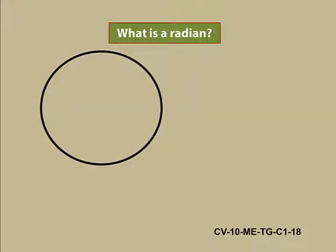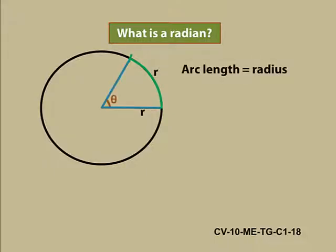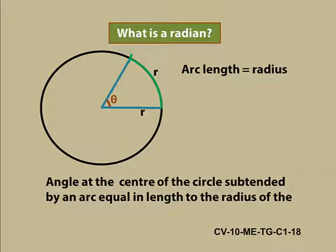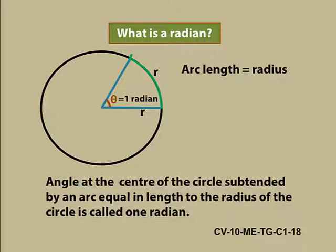Let us consider a circle with radius R. Draw an arc whose measure is same as that of radius. Call this angle Theta. Now this angle is subtended by an arc whose measure is same as that of radius. So we can say one radian is one radius.